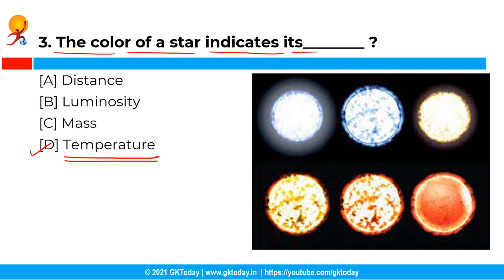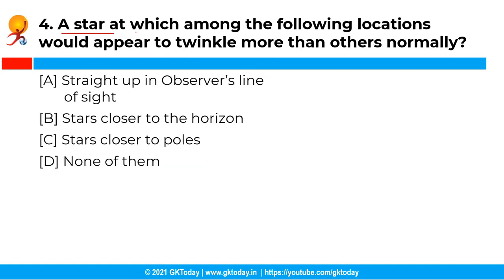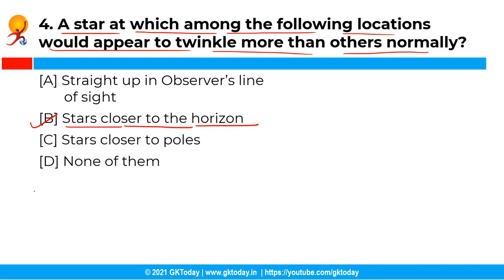The next question: a star at which among the following locations would appear to twinkle more than others normally? The correct answer is Option B, i.e. stars closer to the horizon. Basically, stars seem to twinkle or change their brightness all the time, but in fact most stars shine with a steady light. The movement of air — sometimes called turbulence — in the Earth's atmosphere causes the starlight to get slightly bent as it travels from the distant star through the atmosphere to us on the ground. Some of the light reaches us directly but some gets bent slightly, giving the illusion of twinkling. Stars closer to the horizon appear to twinkle more than others because the atmosphere is a lot denser near the horizon than between the Earth and a star higher in the sky.